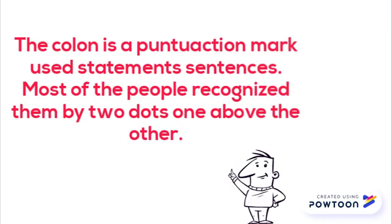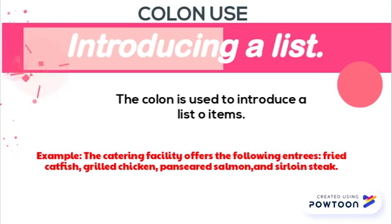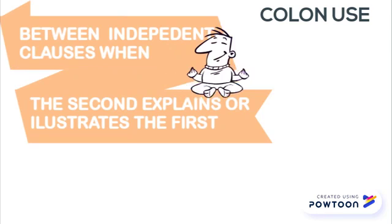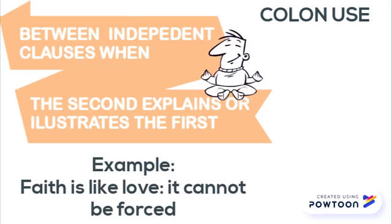The main use of the colon is to show a natural effect of some idea or action, or maybe a consequence, like we can see in this example. The colon is used to separate two independent clauses when the second explains or restates the first. For example: fate is like love, it cannot be forced.